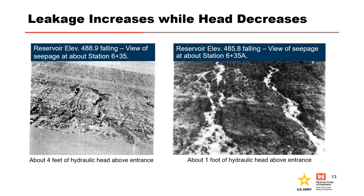In the photo on the left, the reservoir is at elevation 488.9 and falling, which is about four feet of hydraulic head above the upstream entrance location. In the photo on the right, the reservoir is at elevation 485.8 and falling, which is about one foot of hydraulic head above the upstream entrance location. Although the hydraulic head difference decreased by about three feet between the two photos, the leakage appears to increase significantly, indicating the internal erosion pathways are increasing in size.